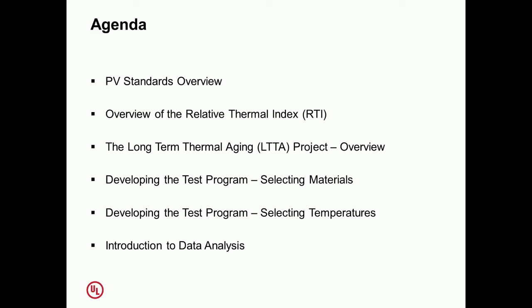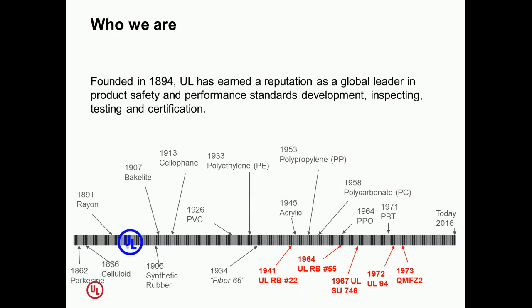What I'd like to take you through today is an overview of standards for photovoltaics, talk about specific polymeric issues we've come across, and talk specifically as an example of how this all comes together by looking at the relative thermal index and long-term thermal aging, how we can assess that on an end product basis as well as individual materials and how that impacts acceptance out in the field. We'll also talk about data analysis.